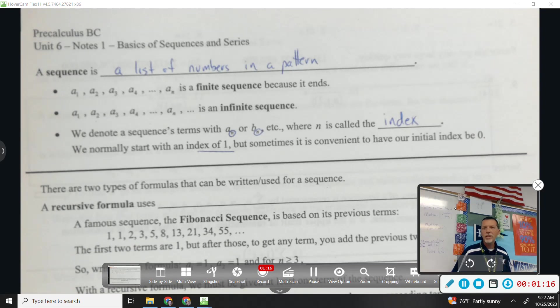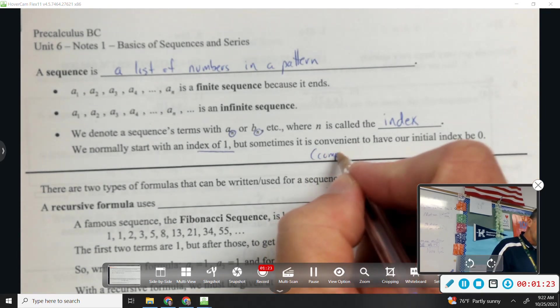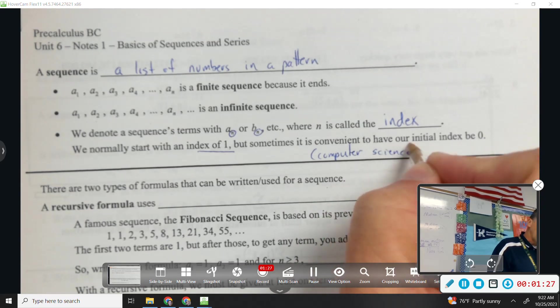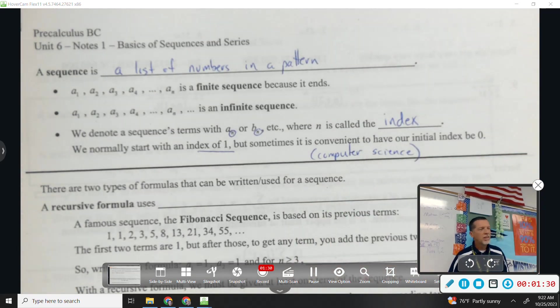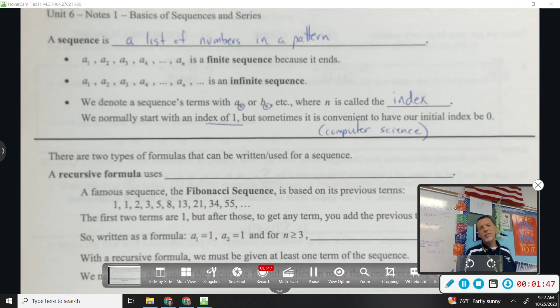That's an easy way to do it. But sometimes, it's convenient to have our initial index be 0. That's exactly right. Computer science frequently starts with starting with 0. Which is fine. It just depends on the application as to which one's better. But if you start at 0, your first term is n equals 0, and your second term is n equals 1. And so you're always off by a little bit. But there's computer science reasons to start at 0.